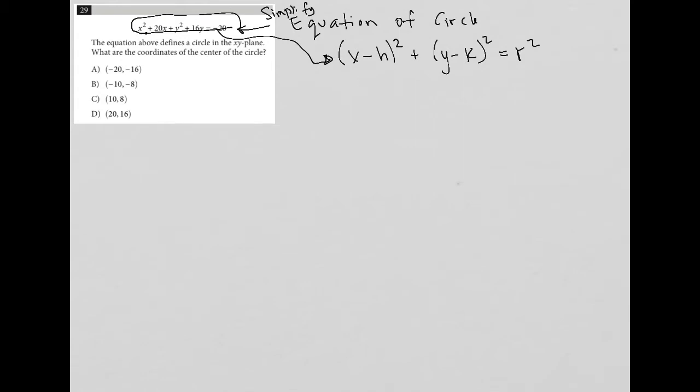Let's continue to read the question. The equation above defines a circle in the x, y plane. What are the coordinates of the center of the circle? So really the game here is how do you convert x squared plus 20x plus y squared plus 16y equals negative 20 into something that looks like x minus h squared plus y minus k squared equals r squared.